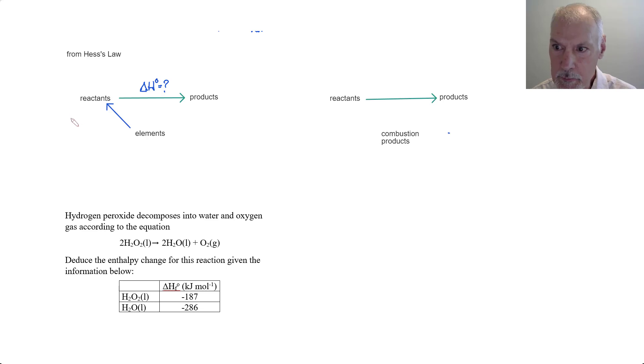This line here represents the sum of all of the enthalpy of formations of all of my reactants. We also know the heats of formation to make our products. That would be the sum of all the enthalpy changes of formation of all of my products.